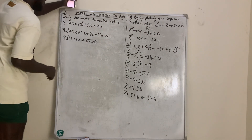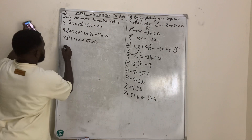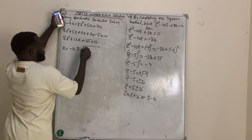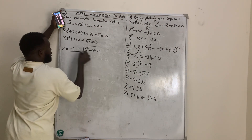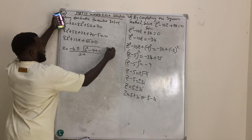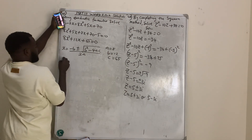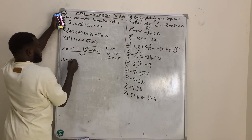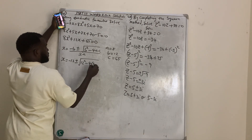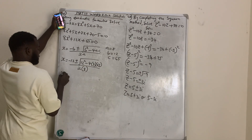Applying the quadratic formula: x equals negative b plus or minus the square root of b squared minus 4ac, all over 2a. Substituting: x equals negative 12 plus or minus the square root of 12 squared minus 4 times 8 times 65, all over 2 times 8.